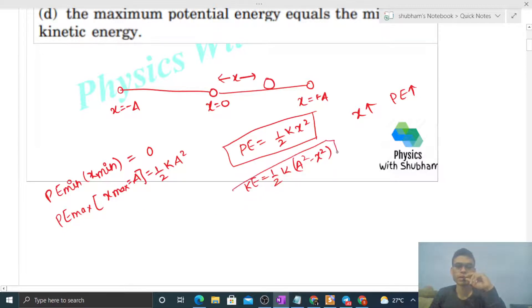Now let's talk about kinetic energy. So see kinetic energy, as x increases, kinetic energy's value will decrease because x has a minus sign in front. So kinetic energy minimum will be at maximum value of x, that is A.